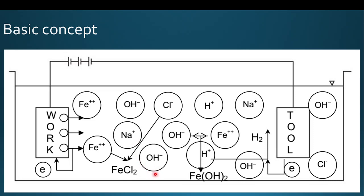When the supply is switched on, ionic dissociation occurs: NaCl splits into Na⁺ and Cl⁻, and water (H₂O) splits into H⁺ and OH⁻. During this process, Fe²⁺ ions detach from the workpiece and move toward the negative terminal of the supply.